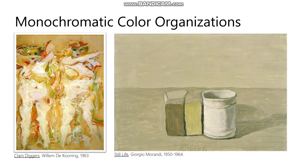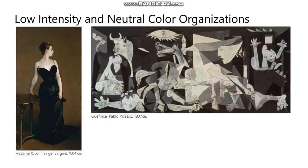Monochromatic color organizations can be described as a painting where all the colors pretty much don't change in hue — you basically pick a hue and stick with it. There are slight changes of hue, but it's mostly changes of value and changes of intensity going on in these paintings. Probably the most extreme examples of a monochromatic color organization would be these low-intensity or neutral color organizations where there's almost no color whatsoever. The Madame X painting is a really interesting example color-wise because it looks like there's way more color in it than there is — really we're looking at just neutrals and browns: black, white, gray, and various types of brown with a little bit of red-brown.